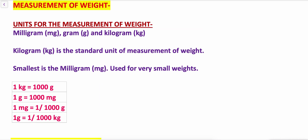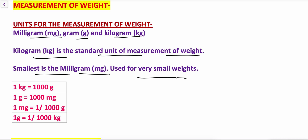The units for the measurement of weight are milligrams, grams, and kilograms. The kilogram is the standard unit of measurement of weight, and the smallest unit is the milligram, used for very small weights. The conversion is: 1 kilogram equals 1000 grams, 1 gram equals 1000 milligrams, 1 milligram equals 1/1000 of a gram, and 1 gram equals 1/1000 of a kilogram.